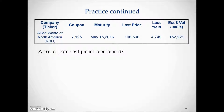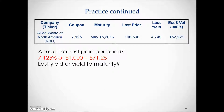To calculate the annual interest rate paid per bond, we look at the coupon value of 7.125%, which is a percentage. To find the actual dollar amount of interest, we take the rate times the principal or par value of the bond, $1,000, giving us an annual interest amount of $71.25. The last yield, or yield to maturity, is given in the table as a percentage — if the investor holds the bond until its maturity date, they would earn 4.749% per year on their investment.